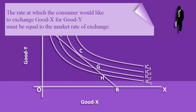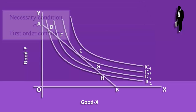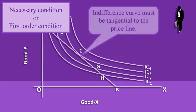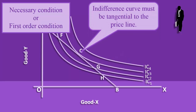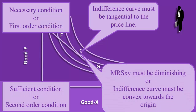The equilibrium condition can be technically stated as follows. First order condition: the Indifference Curve must be tangential to the price line. Second order condition: the marginal rate of substitution of X for Y must be diminishing, or equivalently, the Indifference Curve must be convex towards the origin.